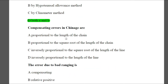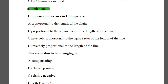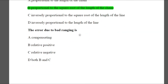Question 15: Compensating errors in chaingage are — Option A: proportional to the length of the chain, Option B: proportional to the square root of the length of the chain, Option C: inversely proportional to the square root of the length of the chain, Option D: inversely proportional to the length of the line. The answer is B — proportional to the square root of the length of the chain.